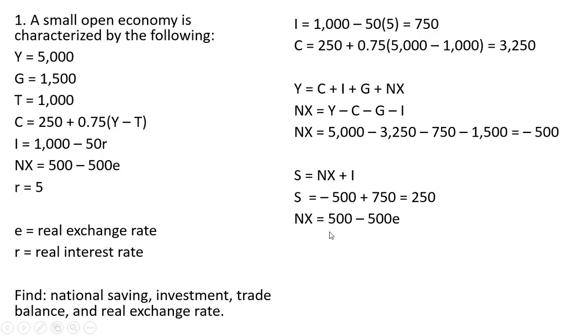Taking our net export equation and setting net exports now equal to minus 500, we're going to solve for E. So dividing through by minus 500, E, the real exchange rate is 2. And we found everything that we set out to find.